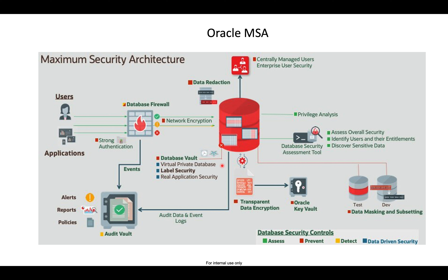This is done using application contexts and policies. Oracle Label Security can label data and restrict access with a high degree of granularity, particularly useful when multiple organizations, companies, or users share a single application. Then there is RAS — Real Application Security — a newer Oracle security concept that provides a declarative model enabling security policies encompassing both the business objects being protected and the principals (users and roles) with permissions. RAS is more secure, scalable, and cost-effective than traditional VPD technology and is recommended over VPD.